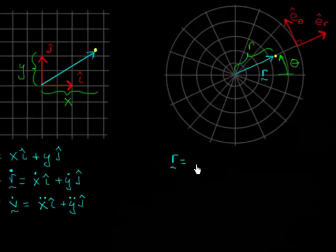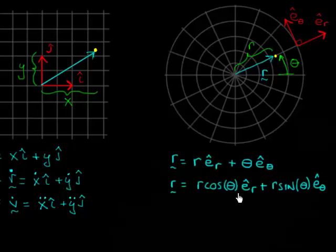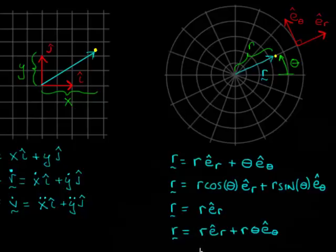When I ask students to write out the position vector in terms of its components, I often get answers that look like r-cosine-theta in e-hat-r plus r-sine-theta in e-hat-theta, or we can write it with a cosine and a sine. Or the position vector is just the distance r in the e-hat-r direction. I want you to stop the video and tell me which one of these is right, or maybe none of them are — make up your own that seems more rational.